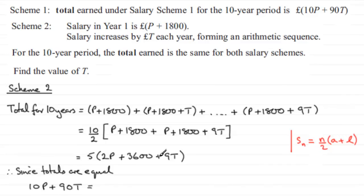We'll expand this: 5 times 2P is 10P, 5 times 3600 is 18,000, and 5 times 9T is 45T.